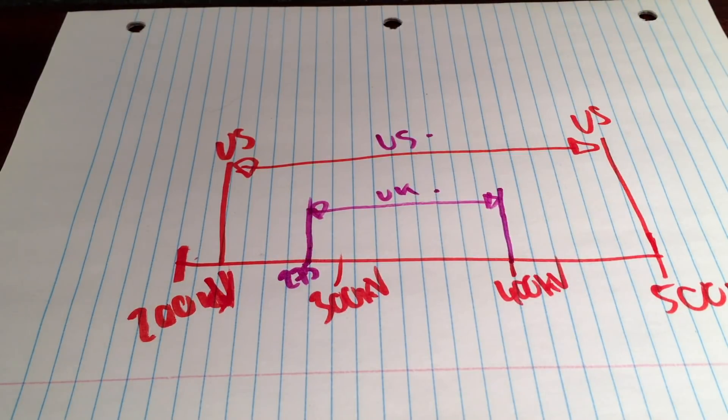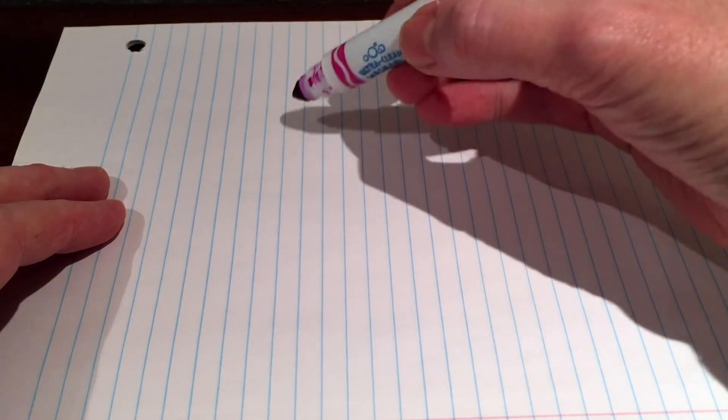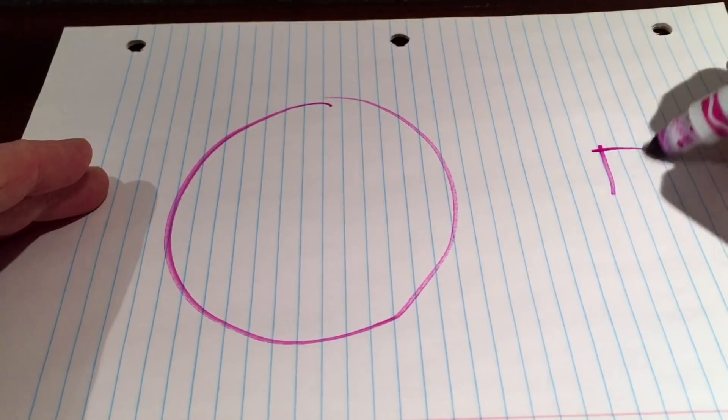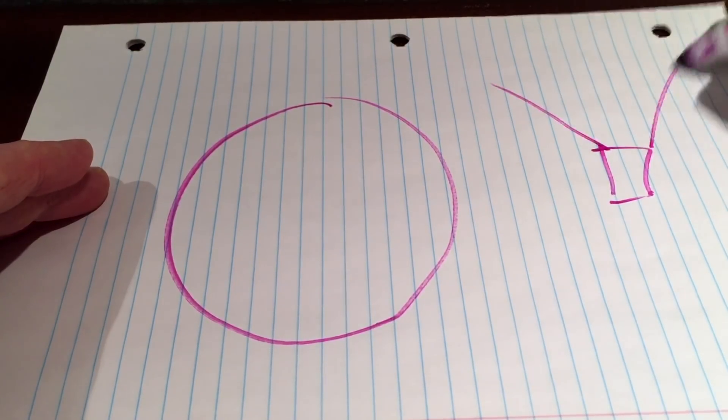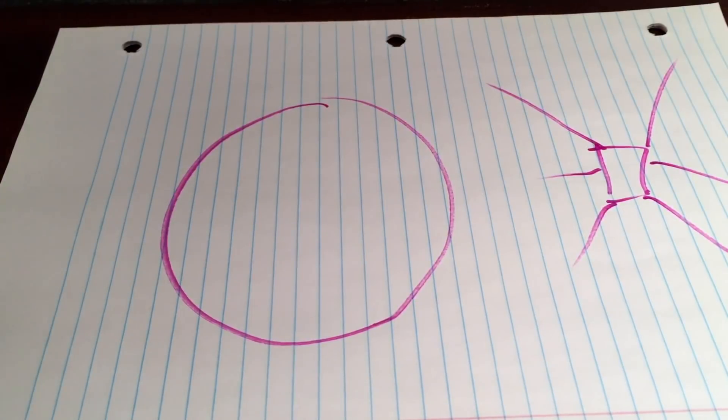When the electricity gets to the house though, this is where things really change. In the UK we have what's called a ring circuit or a ring final circuit. Everywhere else in the world uses what's called a radial circuit where things come out this way.